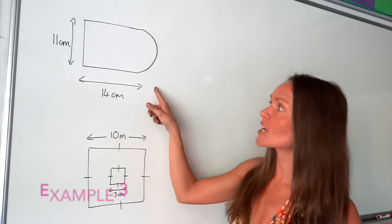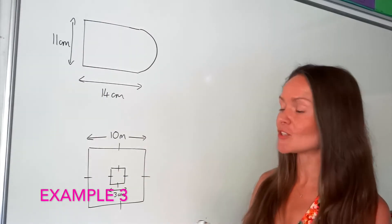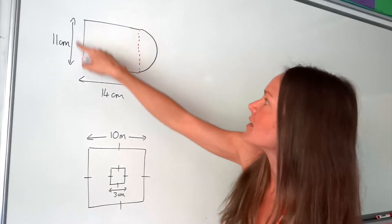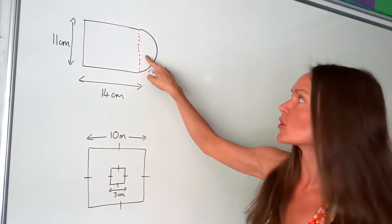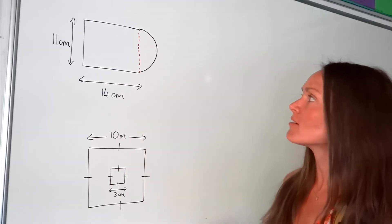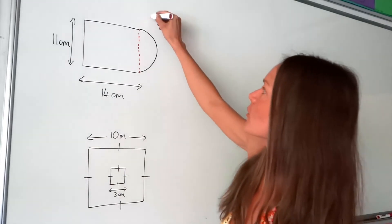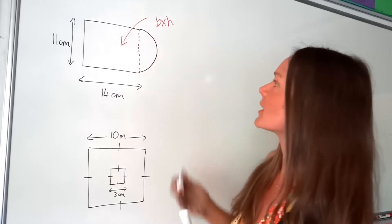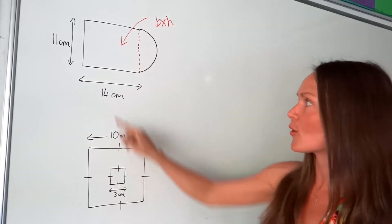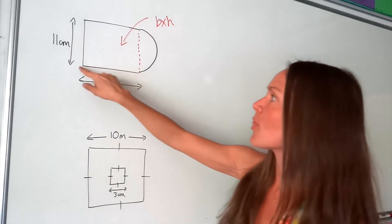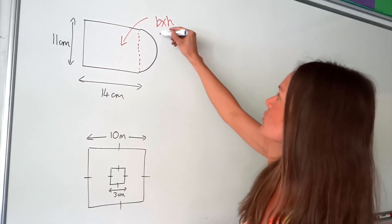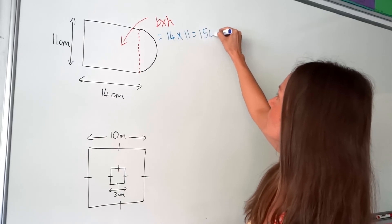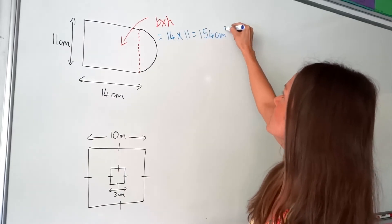So this compound shape up here I can split up into a rectangle on the left-hand side and a semi-circle — so just half a circle. The area of a rectangle, well we know how to do that, is just base multiplied by height. So the base of this rectangle is 14 and the height is 11, so we multiply those together, which is 154 centimetres squared.